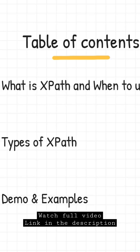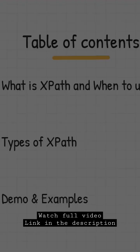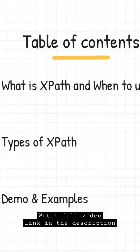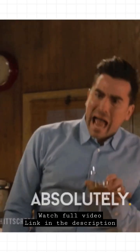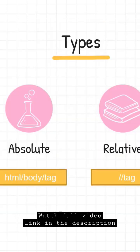In that scenario, we have to go with XPath. There are two major types of XPath: one is absolute and another is relative. We never prefer absolute XPath because in absolute XPath we have to write from the root of the HTML document.